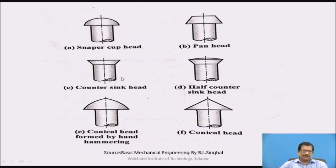The third one is countersink head. If you observe the head shape, it is like a countersink. When we carry out countersinking on the plate, the shape of the countersink will be like this. The head is like this and the other one is the tail, which is hammered similarly. The fourth is half countersink head — this countersink is at half side, whereas the other half will be flat. That is called half countersink head.